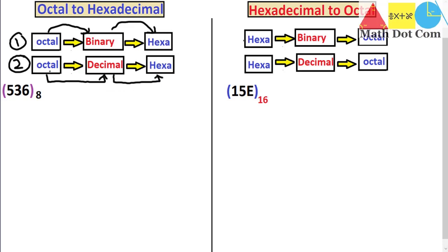We'll start with the example: the given number is 536, which is an octal number. Keep in mind that whenever you are given an octal number, its digits should be from 0 to 7. You will not see any digit other than 0 to 7 in an octal number. We are going to convert it into hexadecimal.